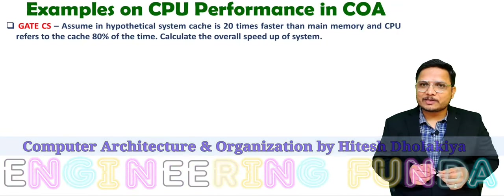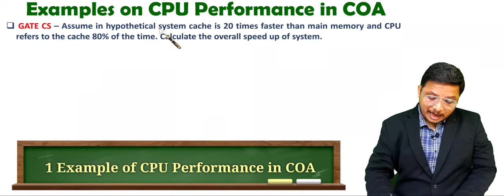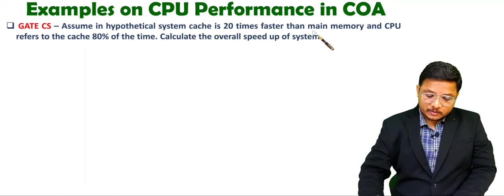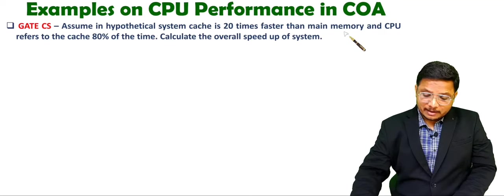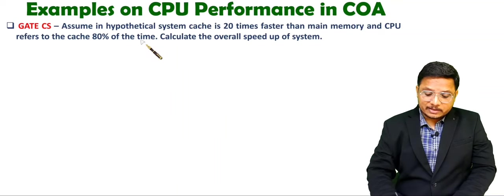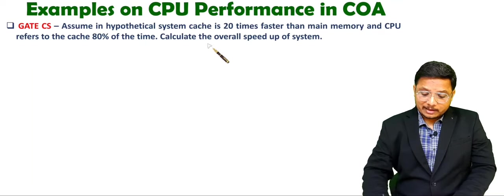Let us have the first question. In a hypothetical system, cache is 20 times faster than main memory, and CPU refers to the cache 80% of its time. Calculate the overall speedup of the system.